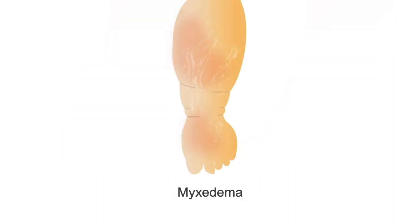Whereas lymphedema is caused by an obstruction in the lymphatic system, myxedema is caused by the accumulation of connective tissue molecules in the soft tissues. Severe hypothyroidism, for example, can cause myxedema that presents as dry, thickened skin with non-pitting edema and a yellow-to-orange discoloration. Localized pre-tibial myxedema is often seen in patients with Graves' disease.